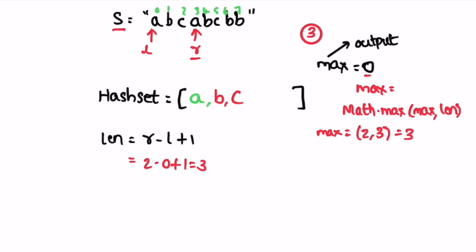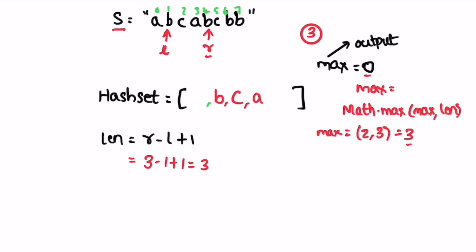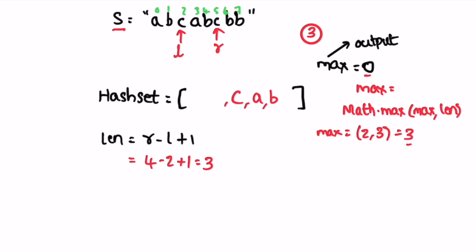Next iteration: character at right is 'a', which is present in the set. So we remove the element at left from the set and increment left, then add 'a' back. Length is still 3, max remains 3. Next, 'b' is also present in the set, so we remove the element at left, add 'b' at right, increment left. Length is 3, max remains 3.